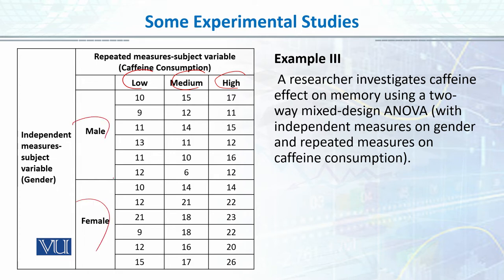The other variable, which is between-group, is male and female. As you can see, the male and female data are separate — that is called the between-group variable. These are the same participants: 6 males who were given low caffeine on the first day, medium caffeine on the second day, and high caffeine on the third day. The dependent variable is memory — how much they can recall, and how much effect caffeine consumption has on memory.